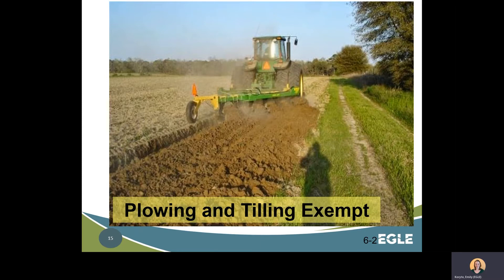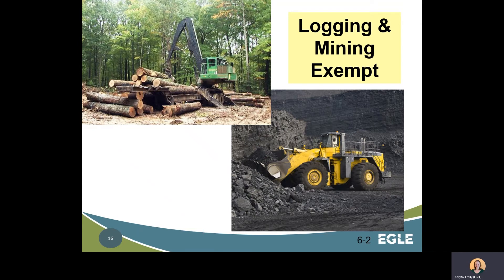Under House Bill 4606, passed in 2016, farmers can construct and remove fences, remove trees and shrubs, install drainage or electrical lines, and build ponds under five acres in size without first obtaining a Part 91 permit. The acts of logging and mining are exempt; however, permits are still needed for access roads, ancillary activities, and clay, gravel, sand, peat, and topsoil mining. Ancillary activities might include the construction of a building or equipment storage areas — if these areas are one acre or more, a permit is required. Additionally, stump removal is not exempt and would require a permit.